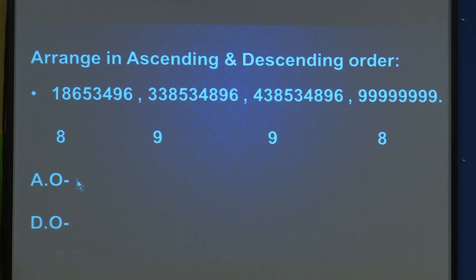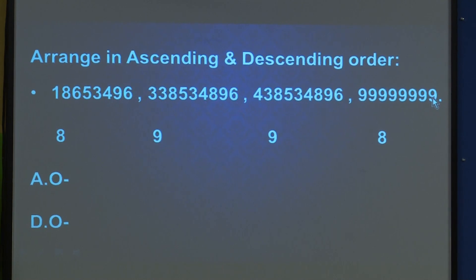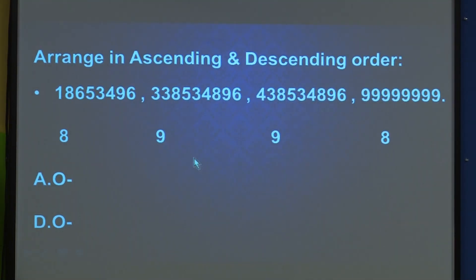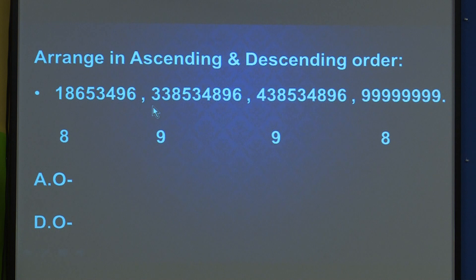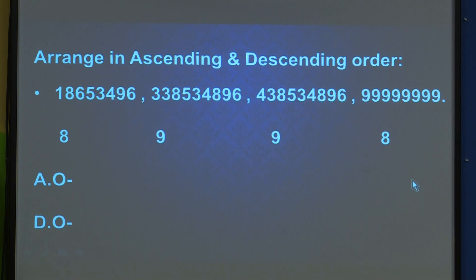Out of the two 8-digit numbers we found which is smaller and wrote it first. Now for the two 9-digit numbers, we look at the first two digits: one has 33 and the other has 43. Since 33 is smaller, that number is written third. The number with 43 is greater, so it is written last.